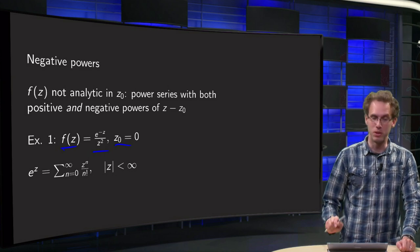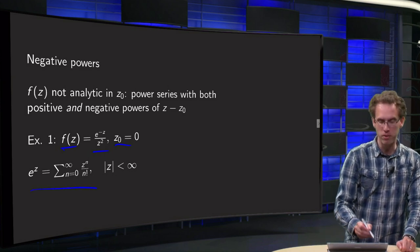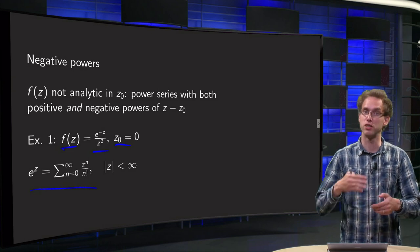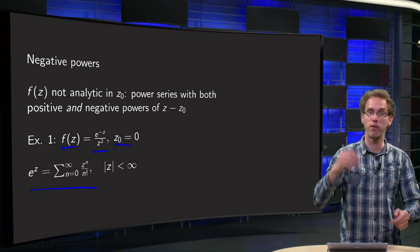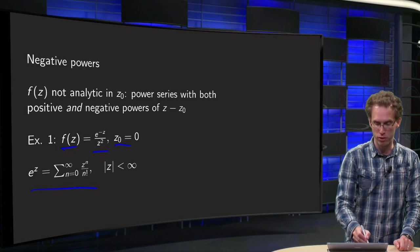So what can we do? Well, we know e to the power z. It is a standard power series. So sum from n equals zero to infinity z to the power n over n factorial converges everywhere.